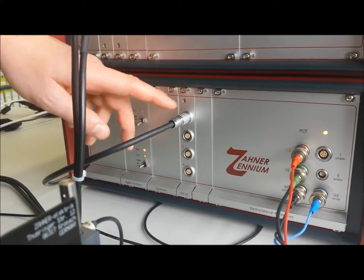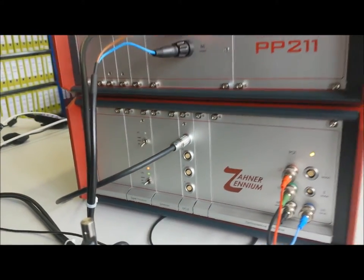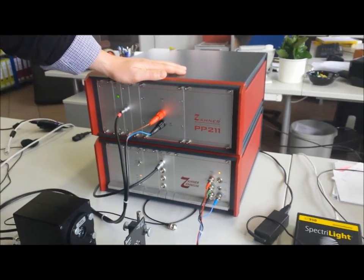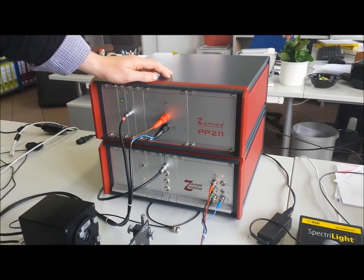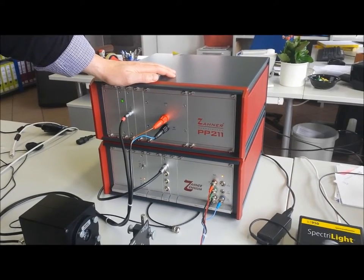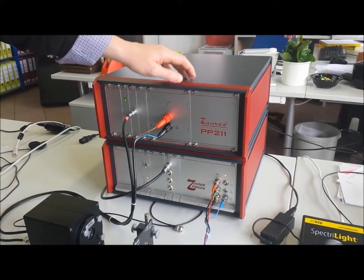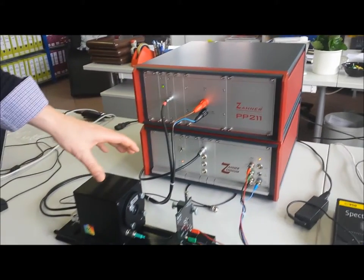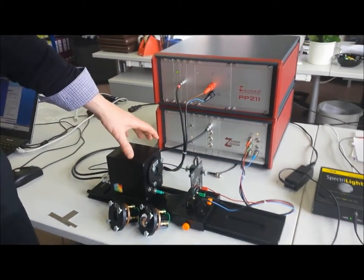I'm going to talk about what both these potentiostats are doing in this system. This particular potentiostat has a voltage of 20 volts and a current output of 10 amps, and the reason it's chosen is because this 10 amps allows us to control this light source.